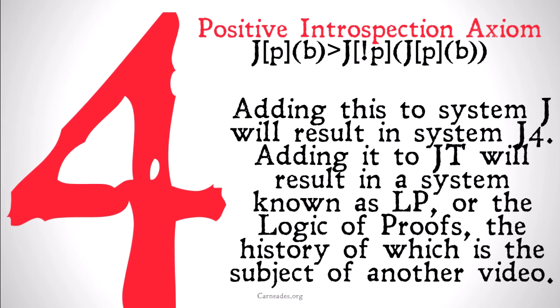Adding this to system J will result in system J4. Adding it to system JT will result in a system known as LP, or the logic of proofs, which I talked about a little in the video on the factivity axiom or axiom T, but it's pretty long and complicated and I don't want to get into it right now.